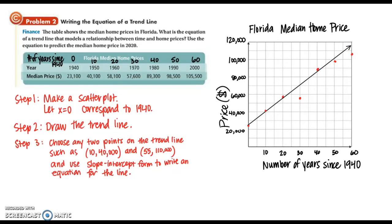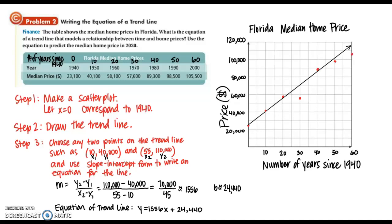After drawing the trend line, we can choose any two points on the trend line — such as (10, 40,000) and (55, 110,000) — and use slope-intercept form to write an equation for this line. Using the slope formula y2 minus y1 over x2 minus x1, the slope is approximately 1,556. Looking at the graph, the y-intercept is approximately 24,440, though your graph may be slightly different. So the equation of the trend line is y equals 1,556x plus 24,440.